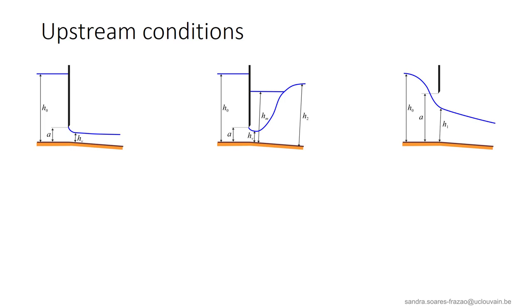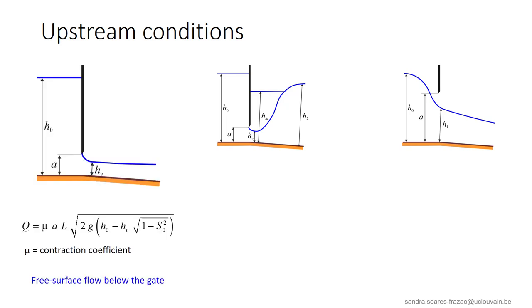If we focus on the upstream conditions, we can identify three possible situations. First, the simple free surface flow below the gate.